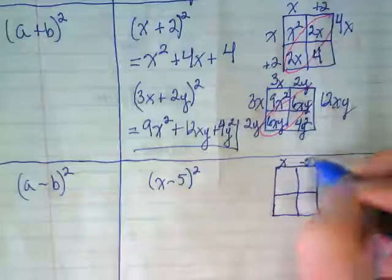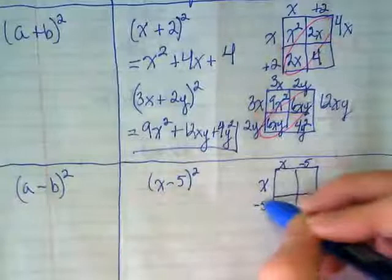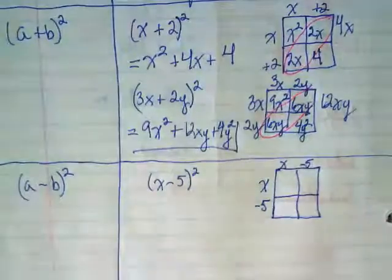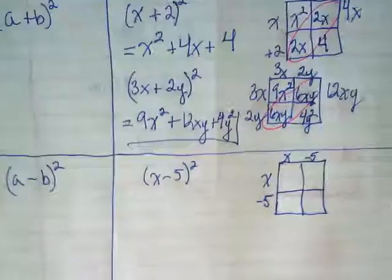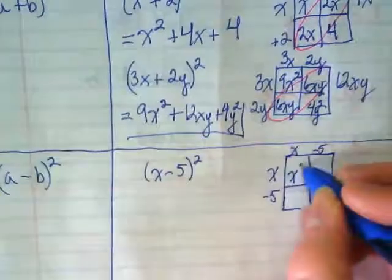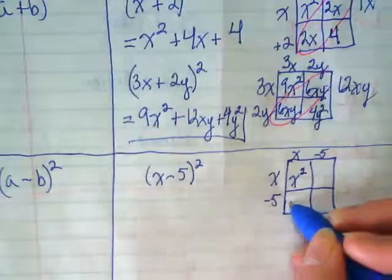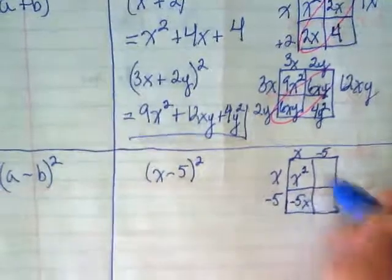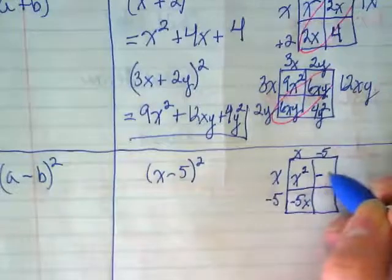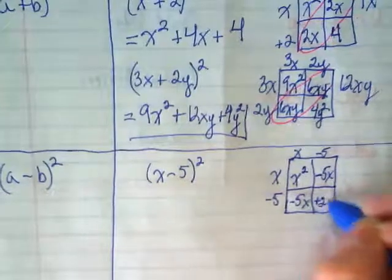(x-5) goes across the top. And (x-5) goes down the side. What is our x times x? x². And this term is going to be what? -5x and then again. -5x and? Positive 25.